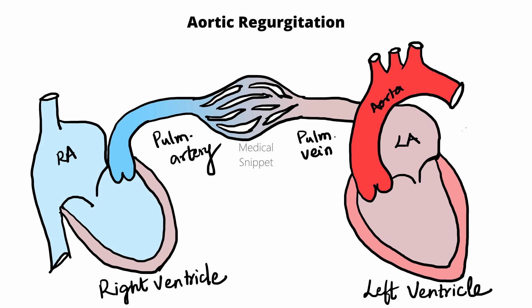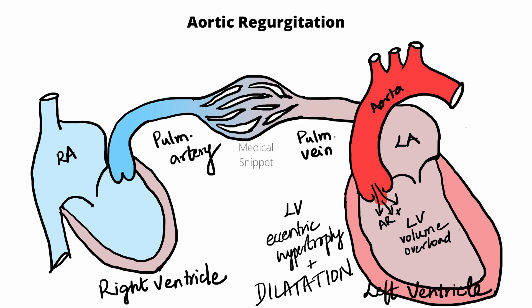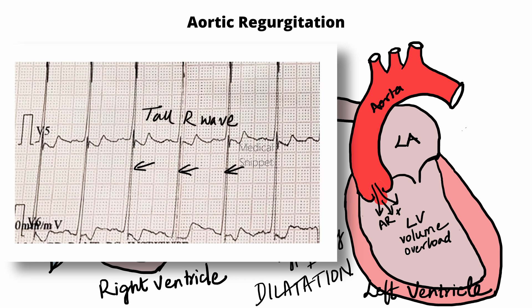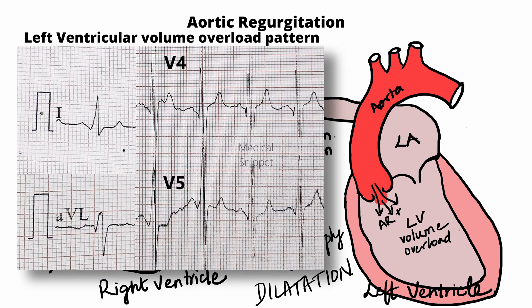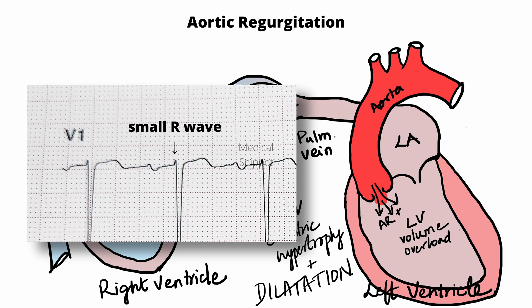ECG changes in aortic regurgitation: In aortic regurgitation, there is leakage of blood from the aorta to the left ventricle during diastole, so there is left ventricular volume overload. This leads to LV eccentric hypertrophy and dilatation. In ECG, it is seen as increased R wave voltage — more than 26 mm — and ST segment depression and T wave inversion in leads V4, V5, and V6. Left axis deviation is also present. A left volume overload pattern is also seen: prominent Q waves in lead 1, aVL, V3 to V6, and relatively small R waves in V1.